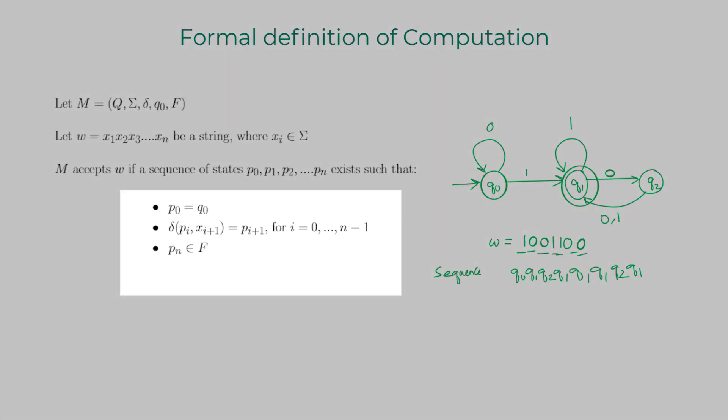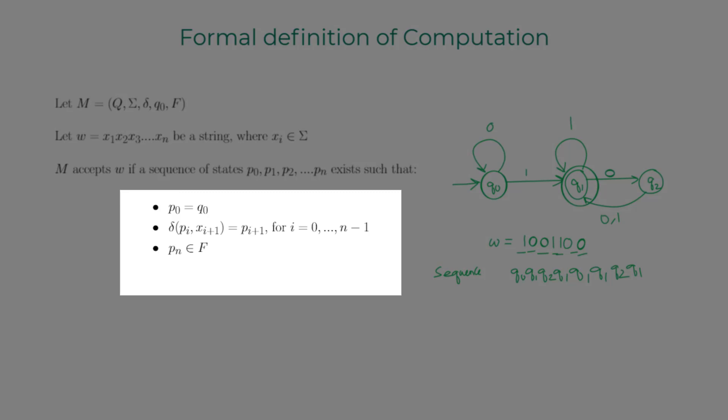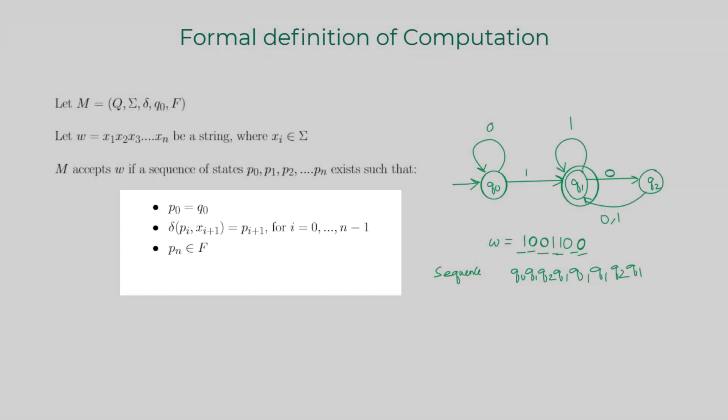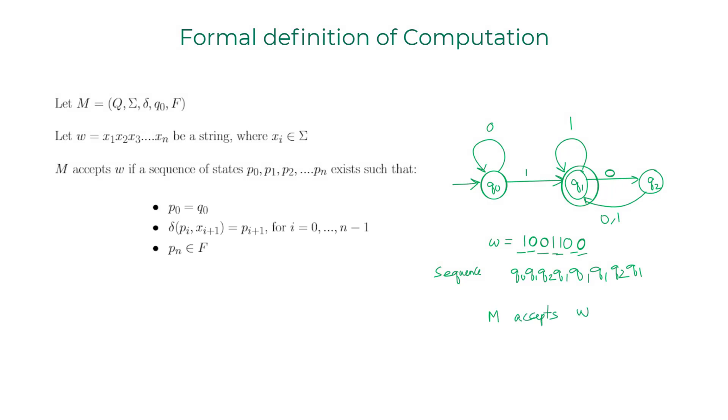Perfect. So we have the sequence of states which satisfy all the three conditions here. So we started out with Q0, we had these intermediate transitions, and then ended up at the final state. So we can say that M accepts W, which is 1001100, is in the language of this DFA.